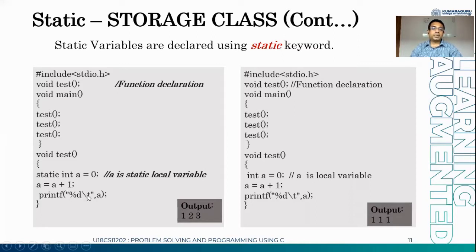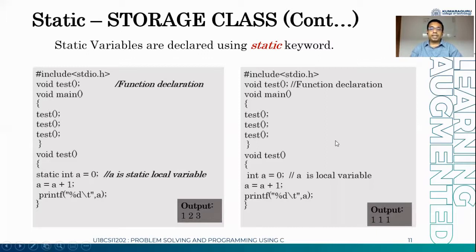In the first call, the static variable is initialized only once. The second call: initialization cannot happen again, so a becomes 2 and it prints the value 2. The third function call: a becomes 3 and the value 3 is printed. So the static variable retains its old value between function calls.